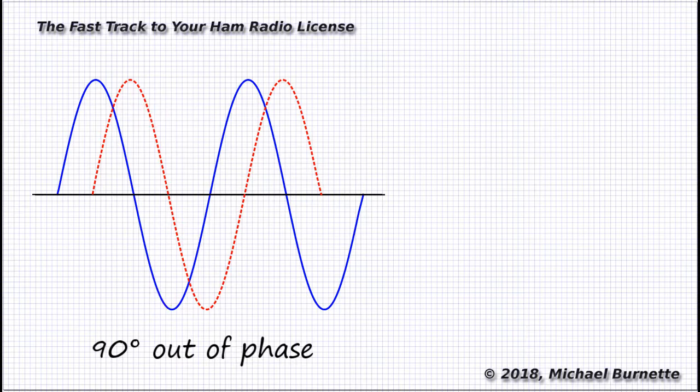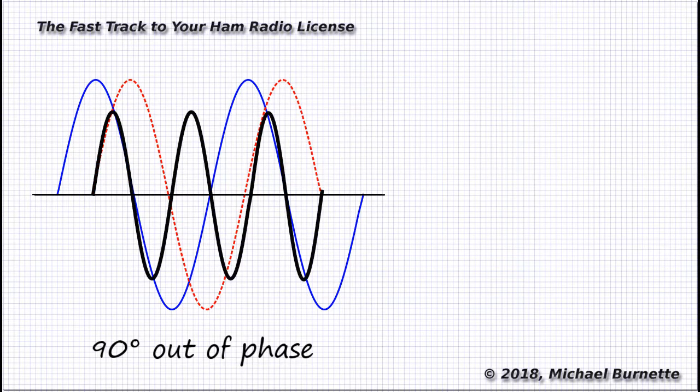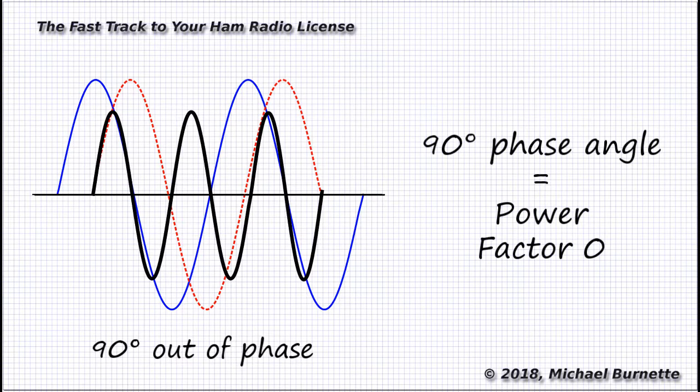In fact, when we look at each point of time on that graph and calculate the real power, it comes out something like the bold black line curve on this graph. Now understand, that bold line represents power. And half the time, it's actually negative. It's pushing power back to the source. So when we average it all out, we have no real power in this circuit at all.